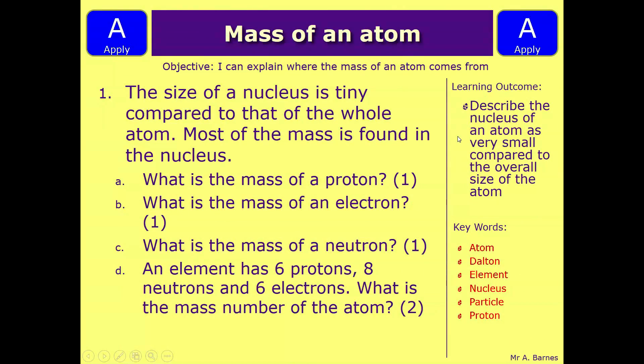Let's have a look at an example question. The question here says the size of a nucleus is tiny compared to that of the whole atom. Most of the mass is found in the nucleus, and then it splits off into 4 sub-questions. A, what is the mass of a proton? B, what is the mass of an electron? And C, what is the mass of a neutron? You've got one mark for each of those.